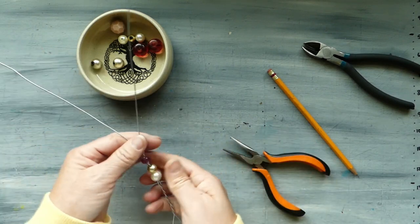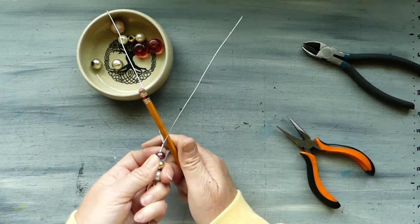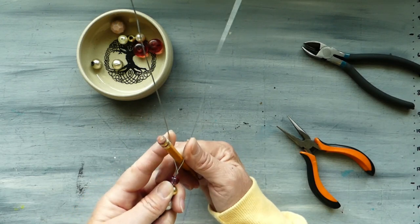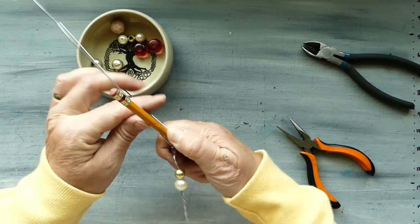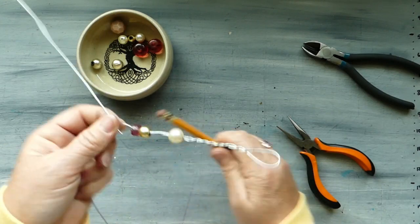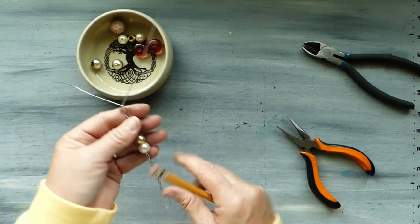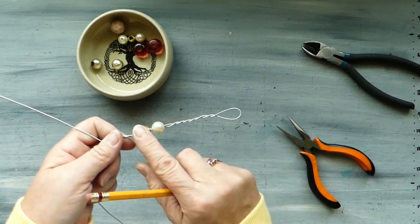All right, now we're going to take our pencil again. We're going to pop it between those two wires and we're just going to bend them around the pencil just like that. And it forms this little loop and that helps stop the beads as well. A little bit of movement there, it's kind of nice, it's kind of pretty.